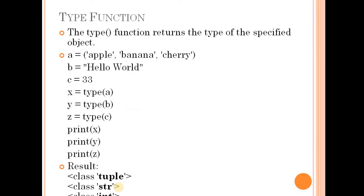The next one is the type function. We have already discussed the type function in the last videos. It returns the type of the specified object or variable. In Python, the type is automatically detected — you do not need to declare it explicitly.